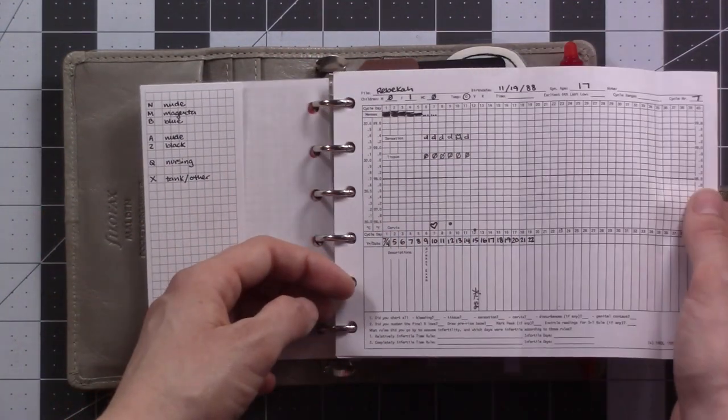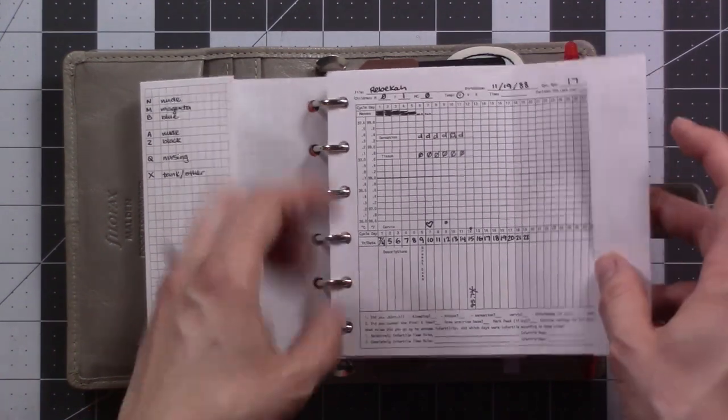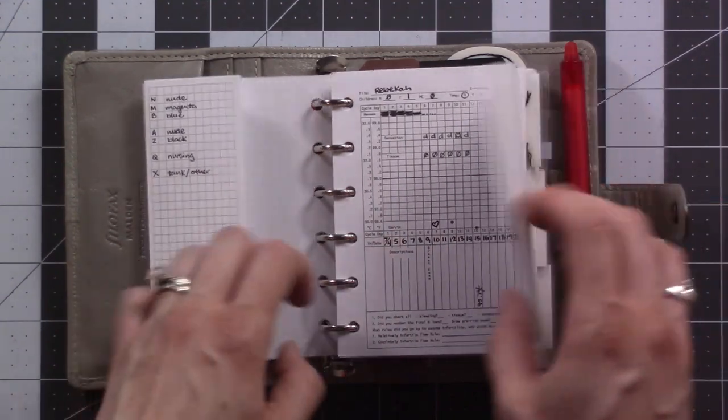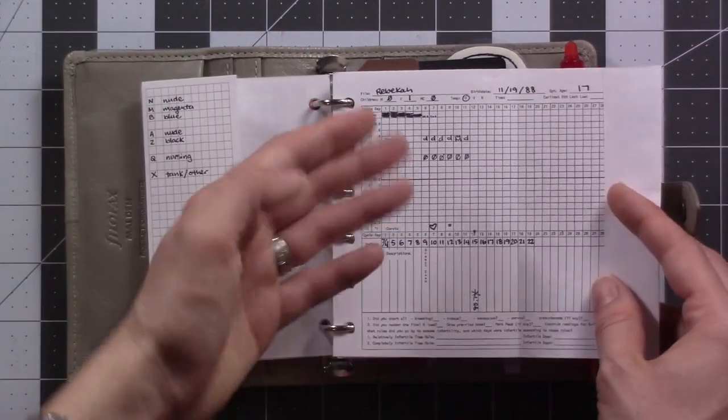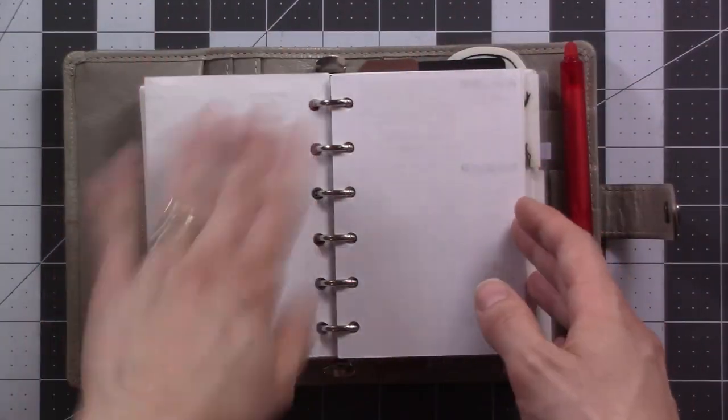This is my NFP chart. I mentioned this yesterday, but I printed it at 60%. It was letter size. I printed it at 60% and ended up fitting in here. And it's still like, I write pretty small, so it works pretty well and that way I don't have to worry about moving data back and forth. It's just there.